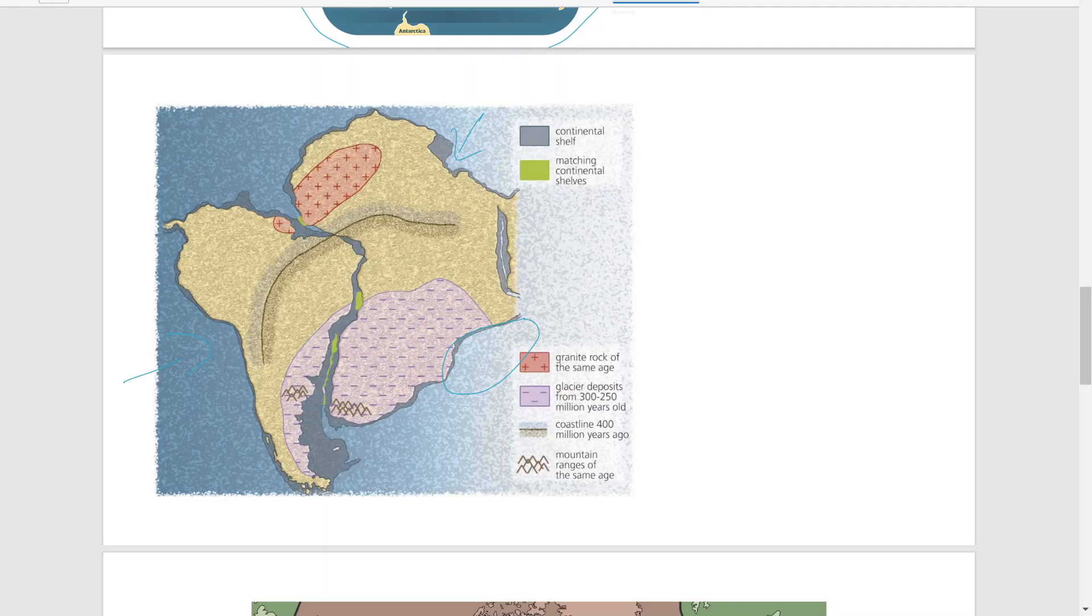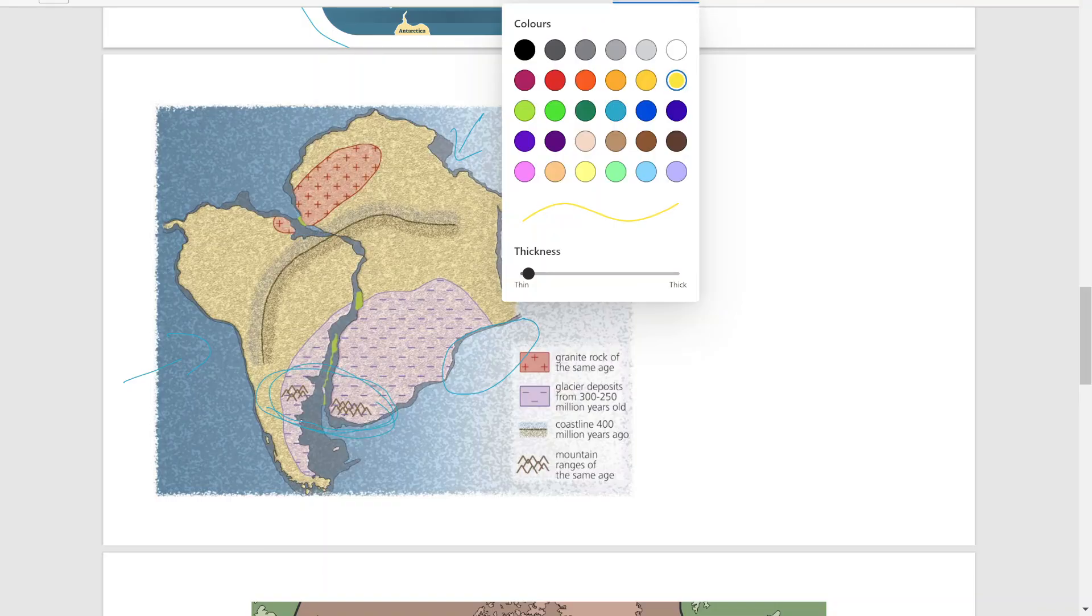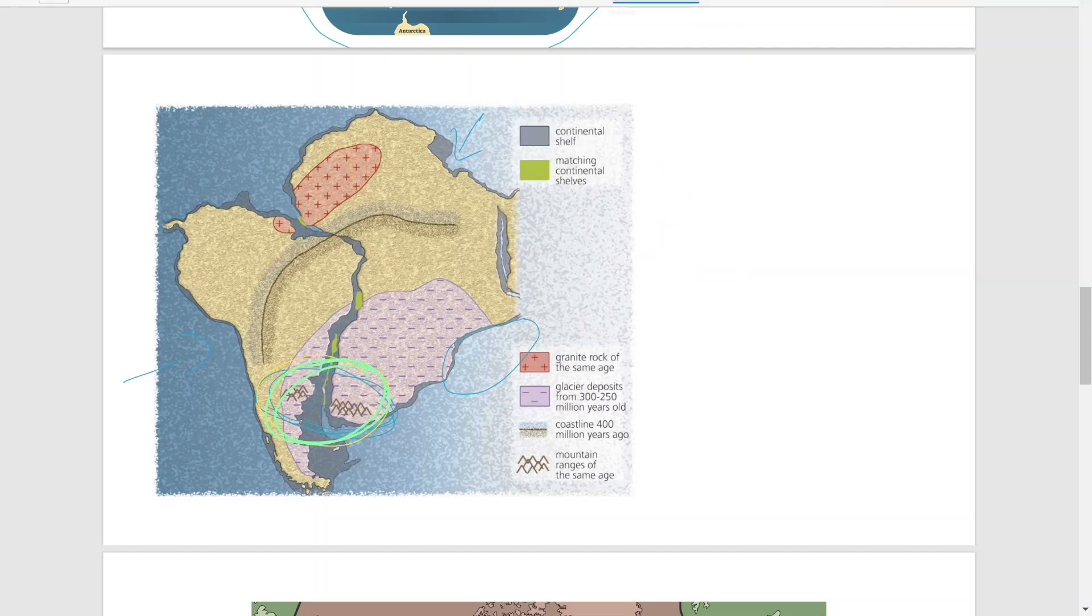In addition to that, he realized that certain countries had identical folding patterns or fold mountains, meaning that during the same folding orogeny, they were created. So there must have been a single land mass for this to happen. One of the examples is here in South Africa and South America, where there were mountain ranges of the same age and pattern. He theorized that this must have been the same mountain range then.